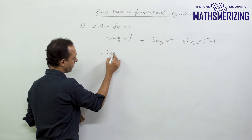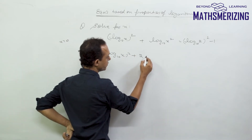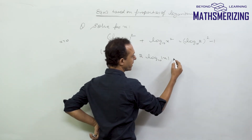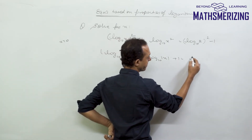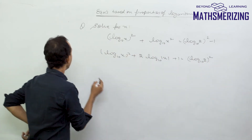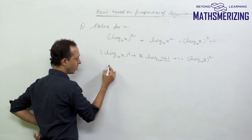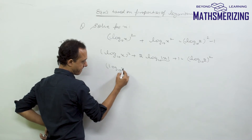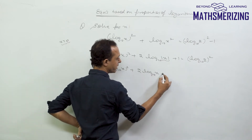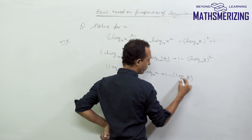I can write it as log x (base 10) whole square plus 2 log|x| (base 10), and taking this one over gives plus 1, equaling log 2 (base 10) whole square. When x is greater than 0, mod x is simply x, so this becomes log x (base 10) whole square plus 2 log x (base 10) plus 1, equal to log 2 (base 10) whole square.